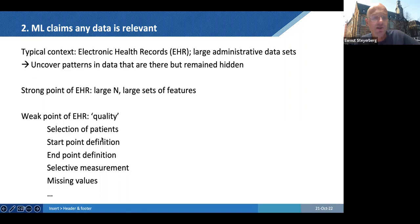If you look at things like electronic health records, which are large in size, which is nice, and then we hope maybe to uncover these patterns that are there but remained hidden. Well, the large N is there, large numbers of features. But the weak point in general is this quality. So selection of patients, how did they enter this registry? And the start point definition. If you do prediction, when is time zero? The endpoint definition. Was there follow-up? All kinds of selective measurements going on. Missing values. Even in this strategy that you may generally try to follow. So EHRs is a fascinating area. But there are some positive stories, but challenging data quality is a general worry I have.